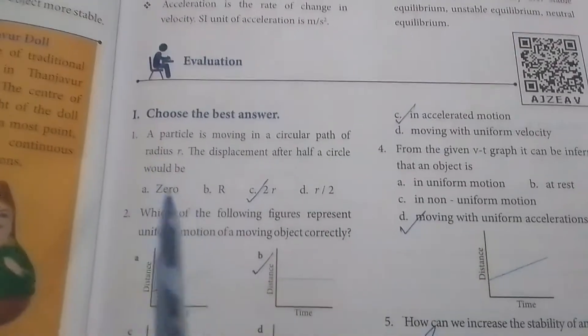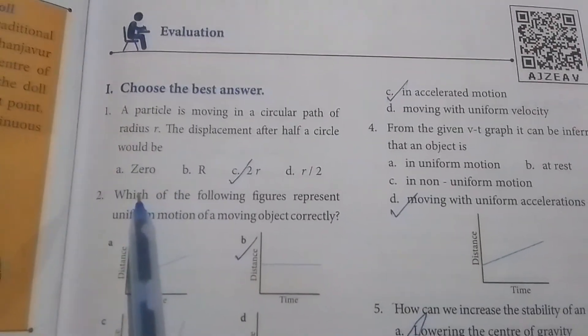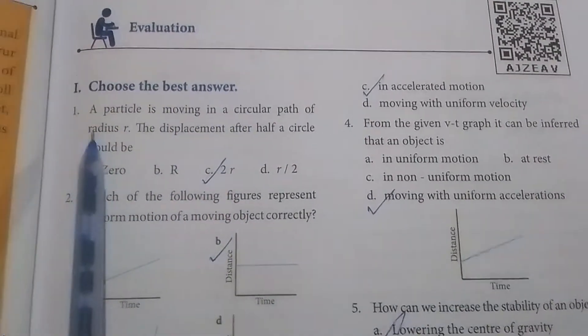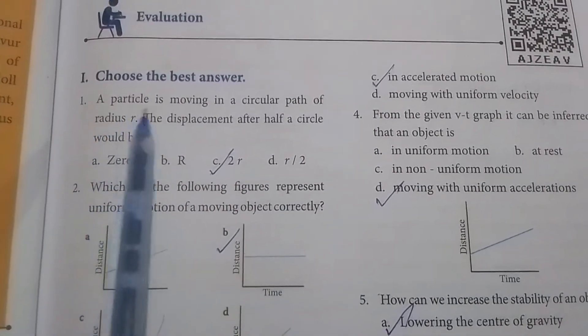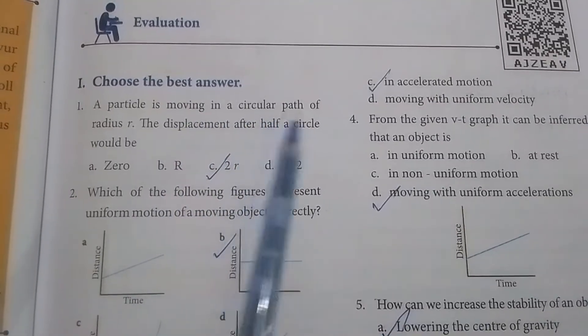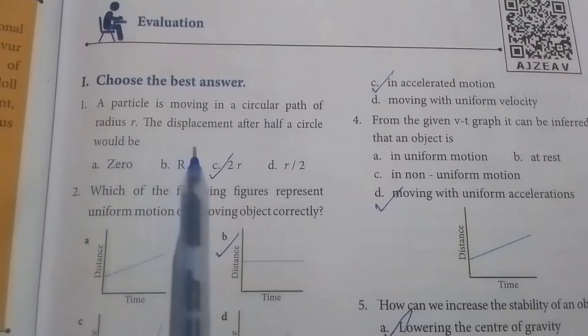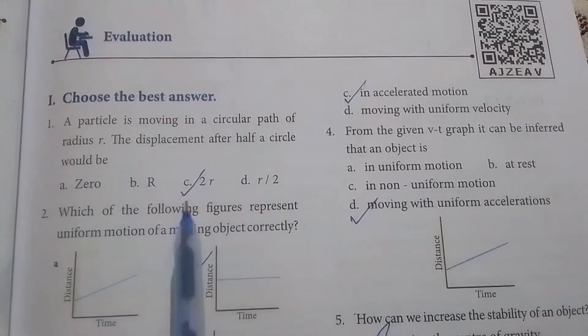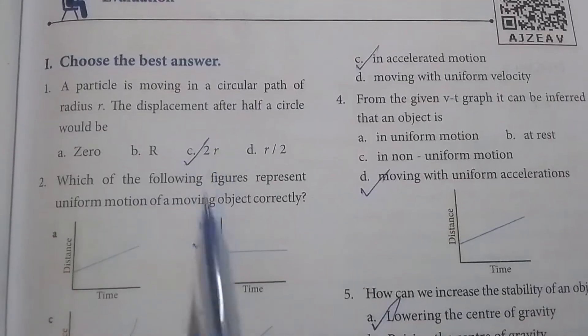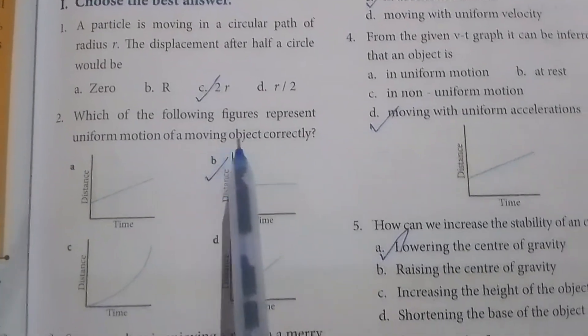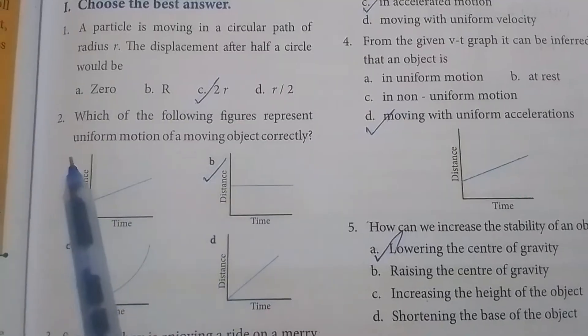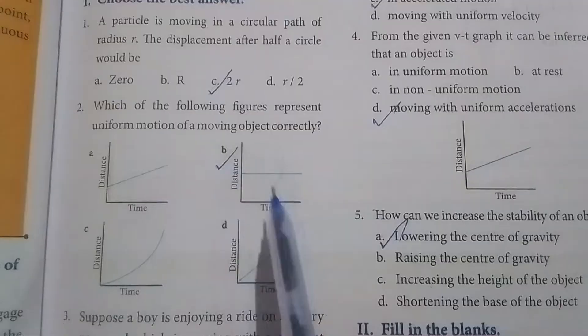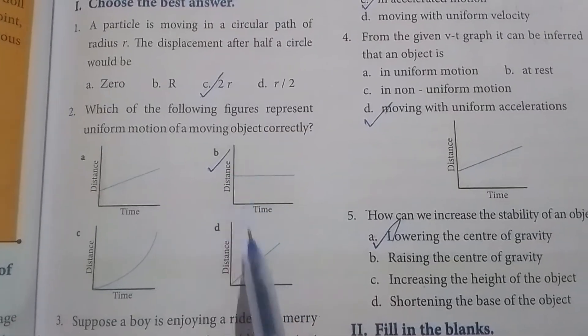First Roman letter: Choose the best answer. First one: A particle is moving in a circular path of radius R. The displacement after half a circle would be - Option C, answer 2R. Second one: Which of the following figures represent uniform motion of a moving object correctly? Option B, answer distance time.